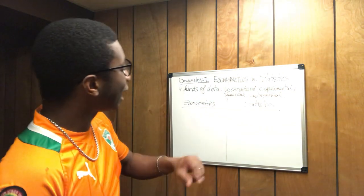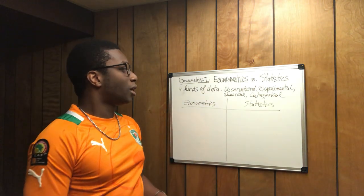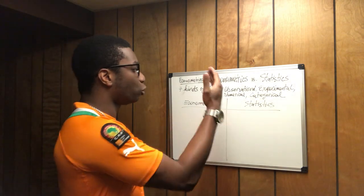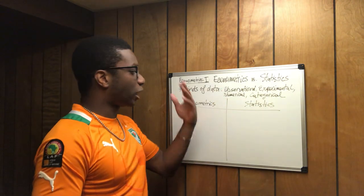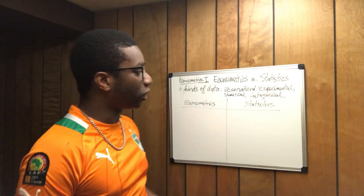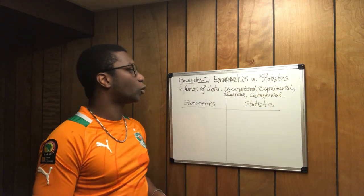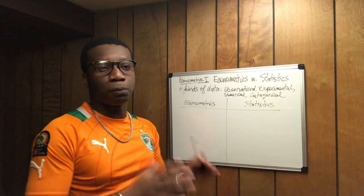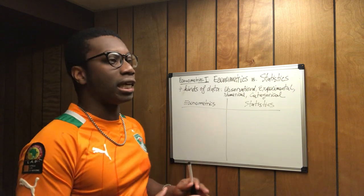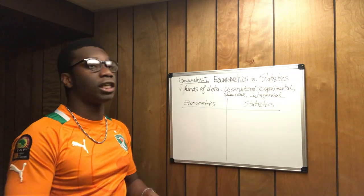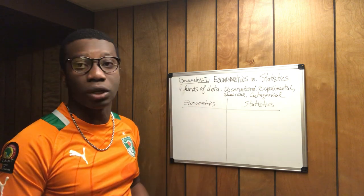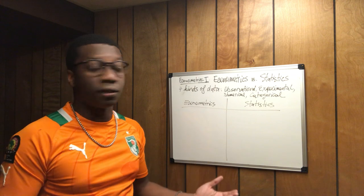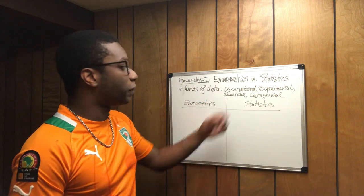There are four kinds of data we use, whether in econometrics or in statistics. You have observational data, experimental data, numerical data, and categorical data. Observational data is retrospective data — it means it's historical data you use. For example, the data of US GDP from 1990 to 2000 is observational data.